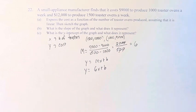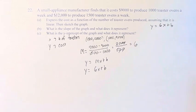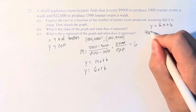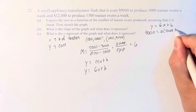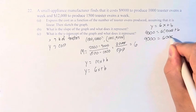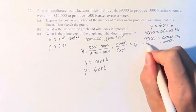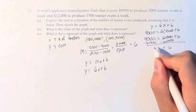So we have y equals 6x plus b. And we can plug in one of our points. Let's plug in this point. So y is 9,000 equals 6 times x is 1,000 plus b. 9,000 equals 6,000 plus b. Subtracting 6,000 from both sides, b equals 3,000.